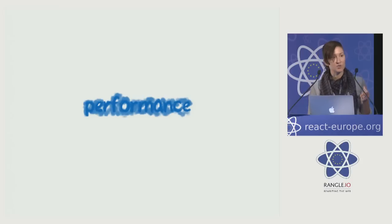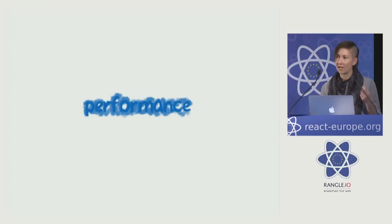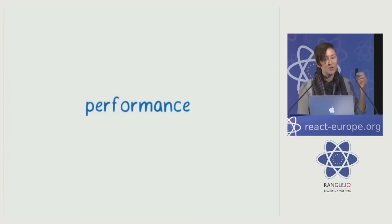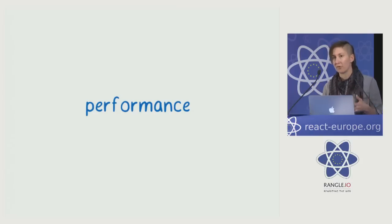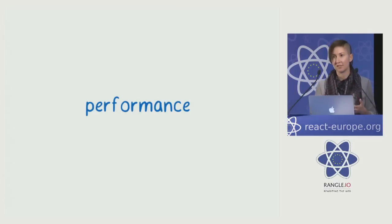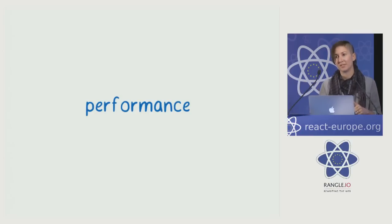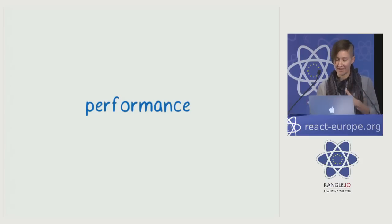Not all recommendations work the same in different situations. So I want to bring these concepts around performance into focus so you have a better understanding of the why behind each recommendation. I'm focusing on a very specific part of performance in React — the performance of the render cycle — not on things like using the production build of React in production.